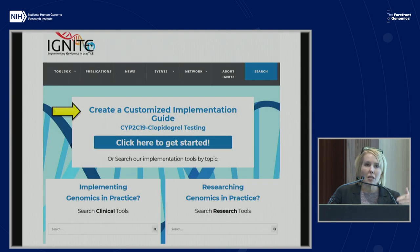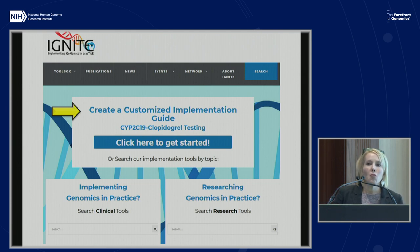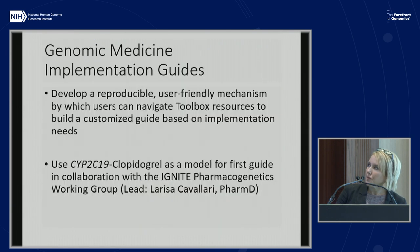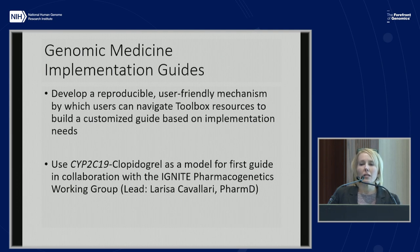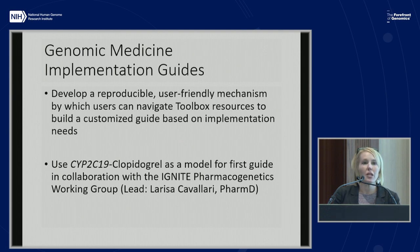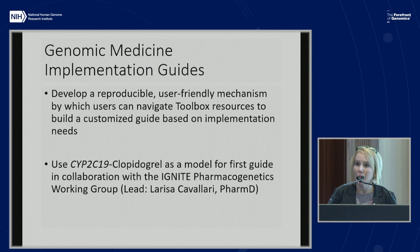The first guide we did was with Clopidogrel and CYP2C19. We started there because we had been working with the pharmacogenetics interest group and with a lot of the affiliate and core Ignite sites to pull together experiences and resources already within CYP2C19 and Clopidogrel in that post-PCI environment. We had already pulled together a lot of the things we would need to build an implementation guide, and that pharmacogenetics working group within Ignite already had a critical mass of those implementers — people who had done this successfully. So we started there, developed a pilot, and moved forward from there.